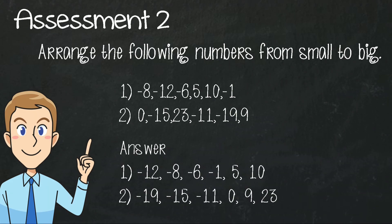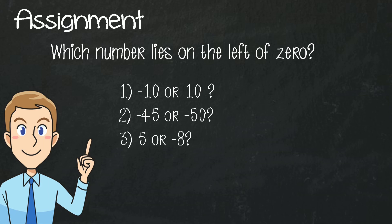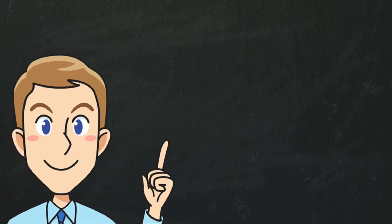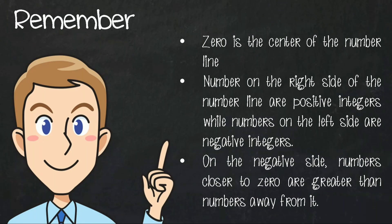Now for your assignment: which number lies on the left of zero? Remember, zero is the center of the number line. Numbers on the right side are positive integers, while numbers on the left side are negative integers. On the negative side, numbers closer to zero are greater than numbers away from it. This is Teacher Jordan — thank you for listening.